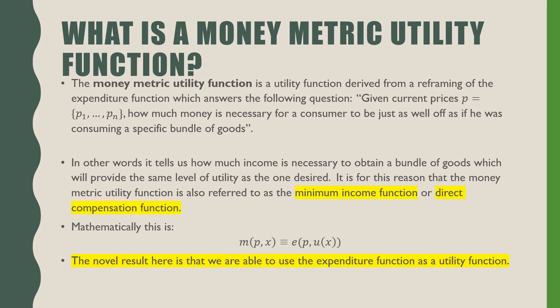Mathematically this is: our money metric utility function m as a function of prices p and bundle x is equivalent to our expenditure function evaluated at prices p and its utility function as a function of bundle x.